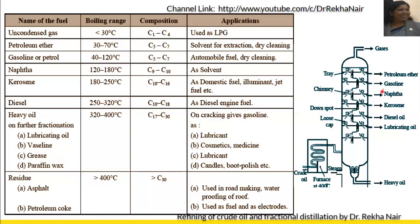The next fraction obtained is naphtha, separated at a boiling range of 120 to 180°C. Kerosene contains around C10 to C16 carbon atoms and is used as domestic fuel and jet fuel, etc.